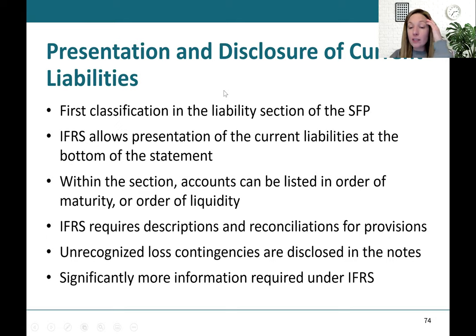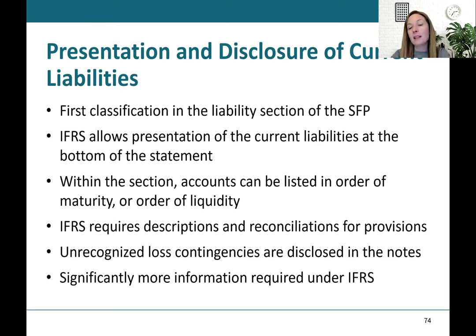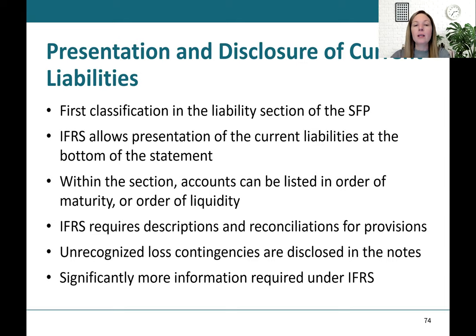Stepping back — this applies to the presentation and disclosure of all current liabilities. Normally, current liabilities are the first classification in the liability section of the statement of financial position. IFRS does allow current liabilities to be listed at the bottom, though this is not common. Within each section, accounts can be listed in order of maturity or liquidity. IFRS requires quite detailed descriptions and reconciliations in the notes for provisions, and any unrecognized loss contingencies must be disclosed, with more information required under IFRS than ASPE.